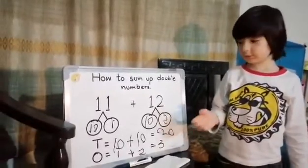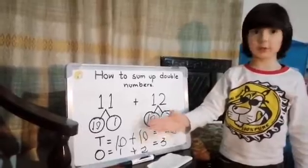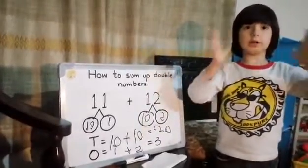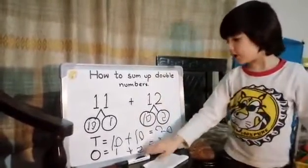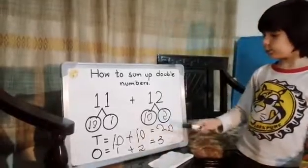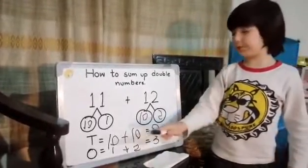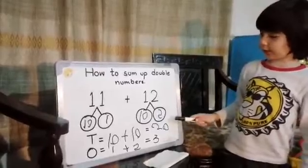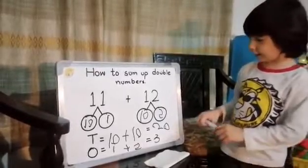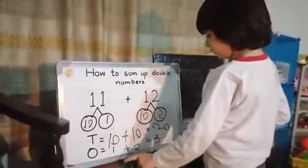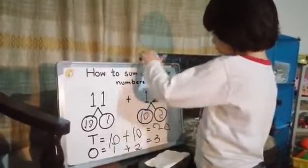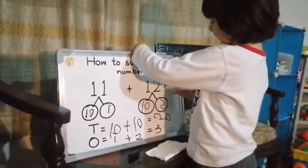So we'll sum up. Now we'll add the 10 and 1 together. So in the 10s we made 20. In the 1s we made 3. So we add 20 and 3 together, and it equals to 23.